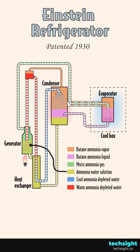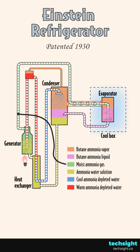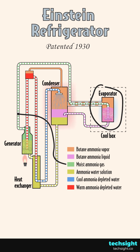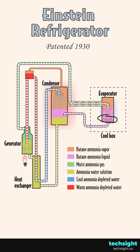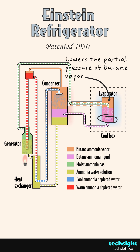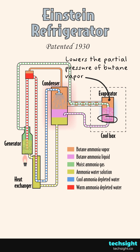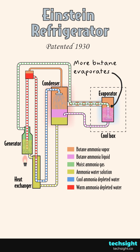Heat is applied to an ammonia water solution in the generator. Moist ammonia gas boils off and flows to the evaporator, which contains butane ammonia liquid and vapour. Bubbling the ammonia gas into the butane ammonia liquid lowers the partial pressure of the butane in the vapour mixture. Partial pressure is the pressure a gas will have when other gases it shares a container with are removed. In this case, the butane's partial pressure lowers enough to allow more butane to evaporate into gas.